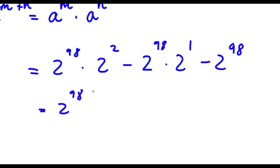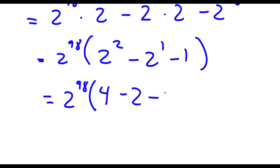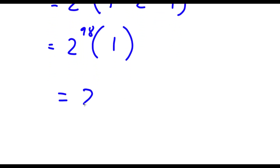If I factor out 2 to the power of 98, I get 2 to the power of 98 times: 2 to the power of 2, minus 2 to the power of 1, minus 1. Now simplifying inside: 2 to the power of 2 is 4, minus 2 to the power of 1 which is 2, minus 1. So that's 4 minus 2 is 2, and 2 minus 1 is 1. So I have 2 to the power of 98 times 1, which is simply equal to 2 to the power of 98, because anything times 1 is itself. So this is my answer.